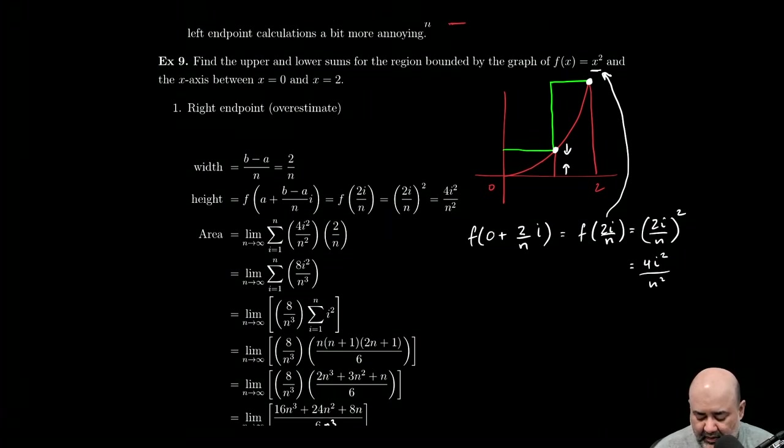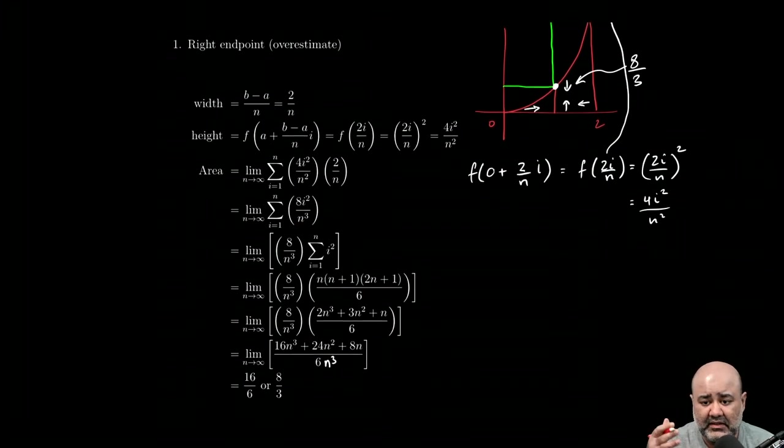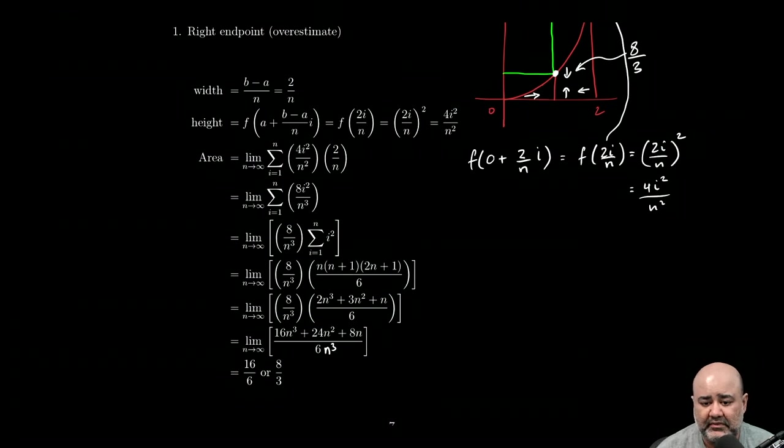So if you were to find the area of this region bounded by x squared on top, x-axis below, between x equals 0 and x equals 2, that area is 8 thirds. Exactly. Because the limit approaches the true value of the area. Ten minutes. All right. See you guys in the next video.